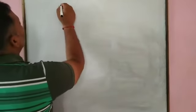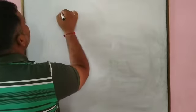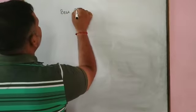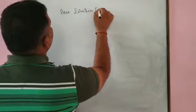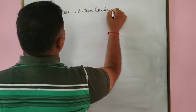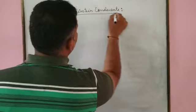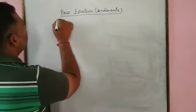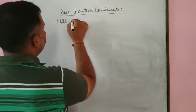Let us discuss Bose-Einstein condensate. In 1920, Satyendra Nath Bose made calculations regarding the fifth state of matter.